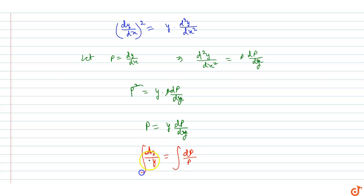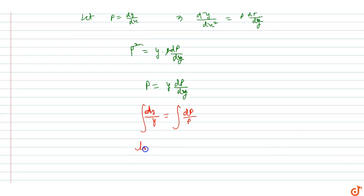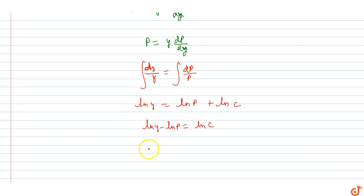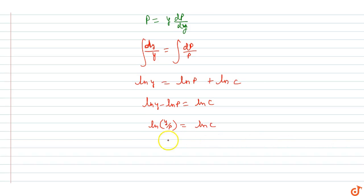Integrating both sides, ln y = ln p + ln c, or ln y minus ln p equals ln c, which gives ln(y/p) = ln c.